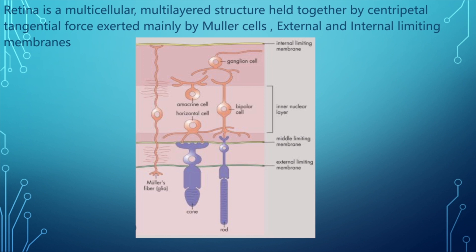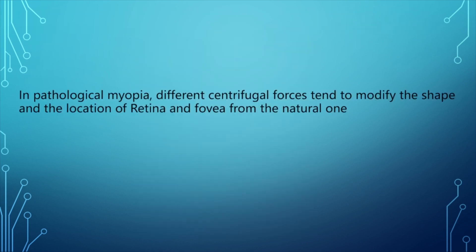The retina is a multicellular multilayered structure which is held together by centripetal tangential forces exerted mainly by the Müller cells, as well as external and internal limiting membranes. In pathological myopia, different centrifugal forces tend to modify the shape and location of the retina and the fovea from the natural one.